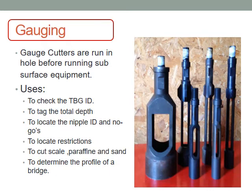First one: gauging. As we said before, slick line is a single strand of wire that is used to run through the well. A gauge cutter is attached to a slick line to run into the completion to check the tubing ID, take total depth, locate restrictions, and cut scale and paraffin.